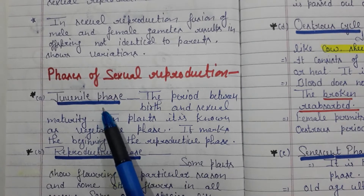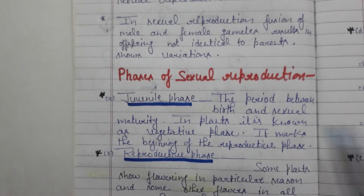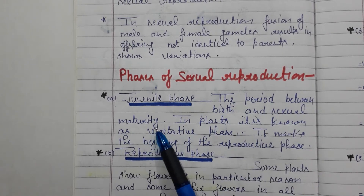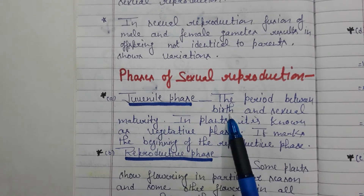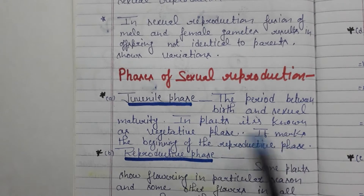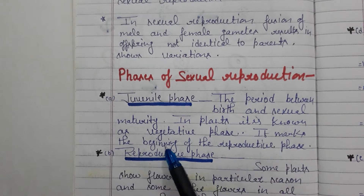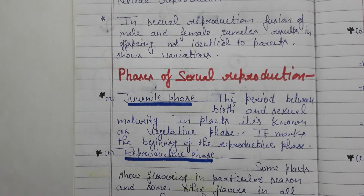The first phase is the juvenile phase. The juvenile phase is the period between birth and sexual maturity. When a child is born, hormones develop and the organism becomes sexually able to reproduce. Until that time, we call it the juvenile phase. In plants it is known as the vegetative phase. It marks the beginning of the reproductive phase.